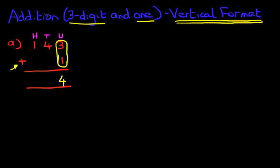We don't even need to work out the other two, because there is nothing there. So four plus zero is four. And over here there's nothing, so the hundreds is one — plus zero is one. So one hundred and forty-three plus one is one hundred and forty-four. Nice and simple.